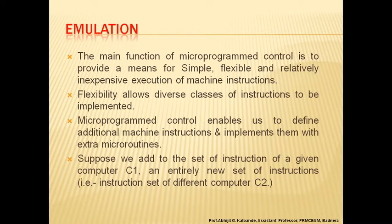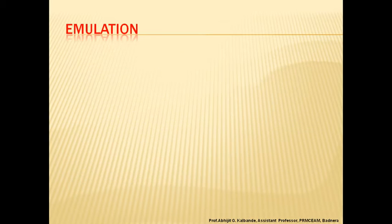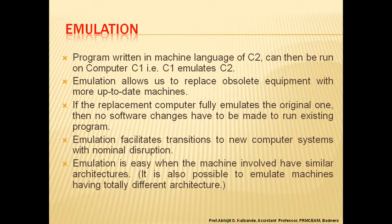Suppose we add to the instruction set of computer C1 an entirely new set of instructions — the instruction set of a different computer C2. A program written in the machine language of C2 can then be run on computer C1. That is, C1 emulates C2.